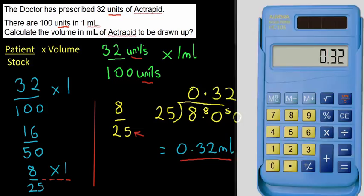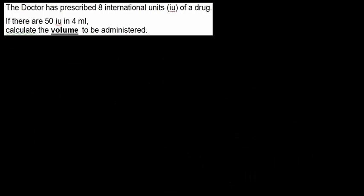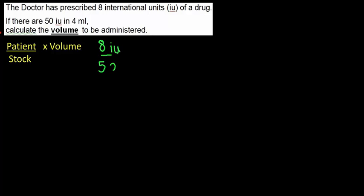Question four: the doctor has prescribed 8 international units (IU) of a drug. There are 50 international units in 4 millilitres. Calculate the volume to be administered. Using the formula — patient over stock, times the volume — I want to give the patient 8 IU; in stock I have 50 IU, and it's in 4 millilitres.